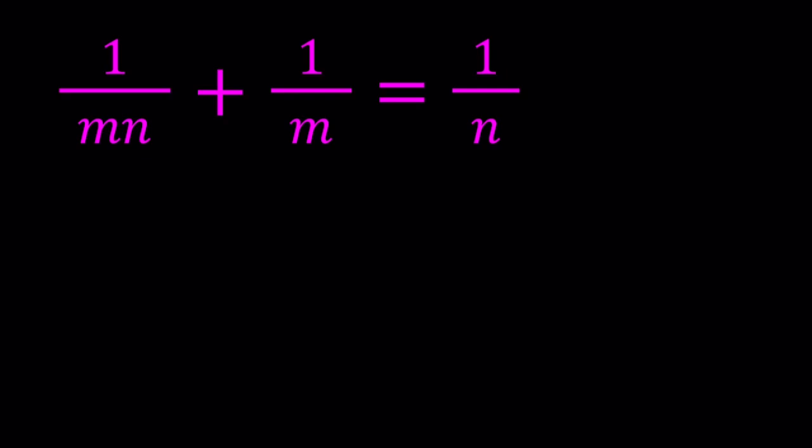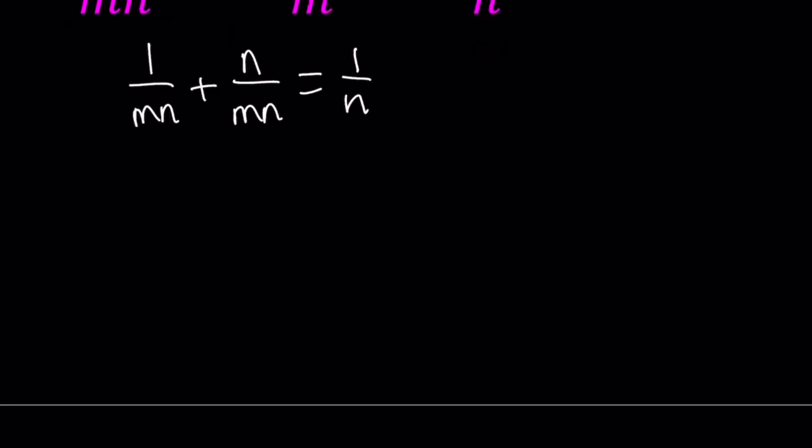Let's make a common denominator first. So multiply the second one by n. Now you can add the numerators: 1 plus n divided by mn equals 1 over n.